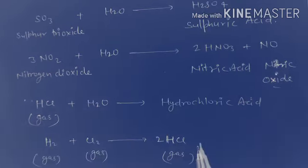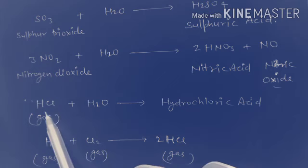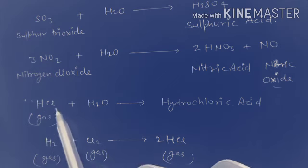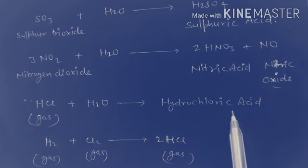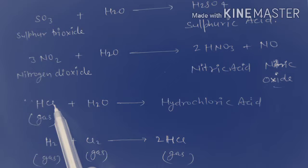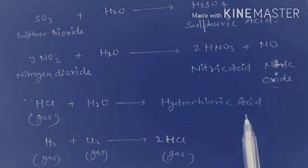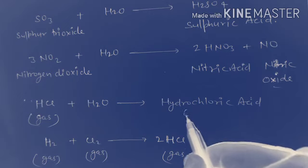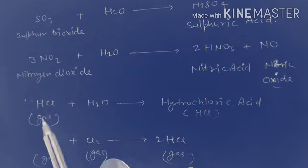Hydrochloric acid: it is formed from gas. In the form of gas, hydrogen chloride gas HCl, where can we get hydrogen chloride gas?